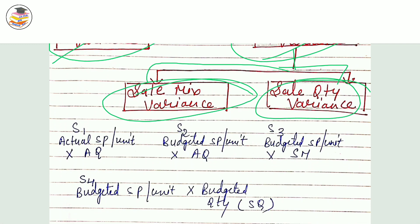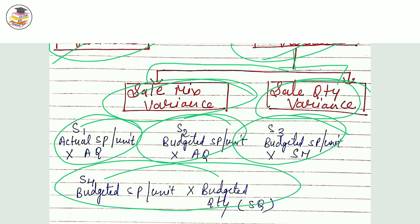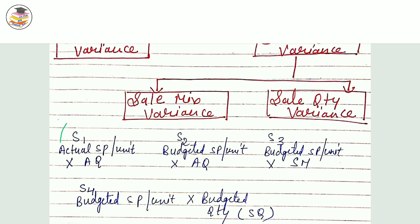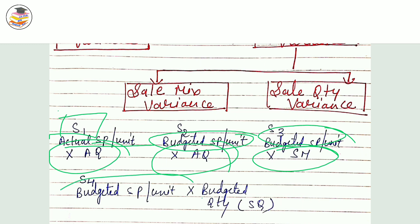Just as material had 4 values (M1–M4) and labor had 5 values (L1–L5), sales also has 4 values: S1, S2, S3, S4. S1 is actual sale price per unit × actual quantity. S2 is budgeted sale price per unit × actual quantity. S3 is budgeted sale price per unit × standard mix. S4 is budgeted sale price per unit × budgeted quantity.